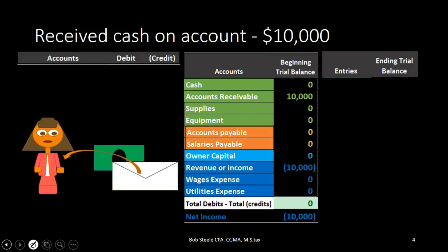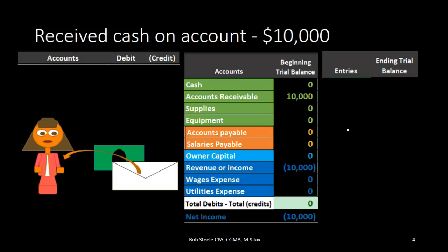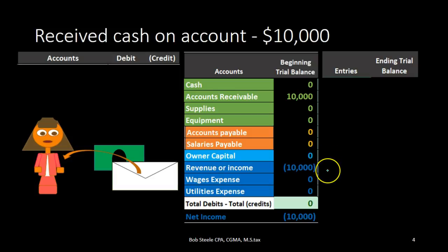In this lecture we're going to record what is typically the second transaction within the accounts receivable or revenue cycle. We're going to record the journal entry up here on the left hand side and then post that to the trial balance over here on the right hand side. The trial balance is organized in terms of the accounting equation, with assets in green, liabilities in orange, and the equity section including the capital account and income statement revenue and expenses.